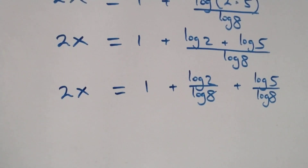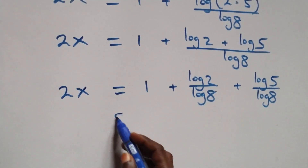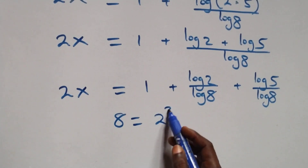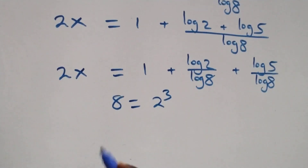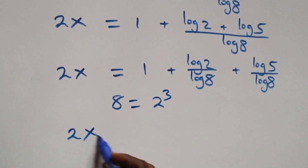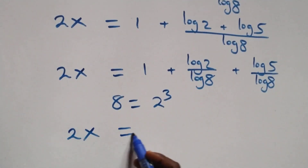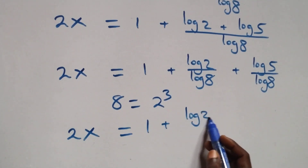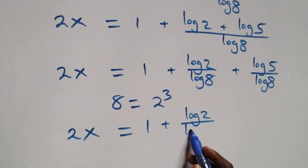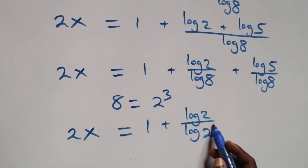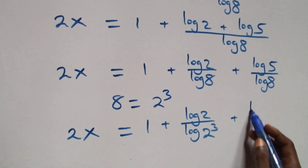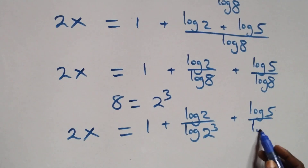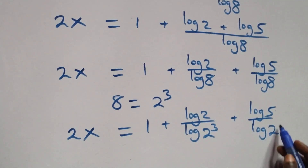Now we can write 8 as 2 times 2 times 2, that is 2 cubed. So what we have becomes 2x equals 1 plus log 2 over log 2 cubed plus log 5 over log 2 cubed.